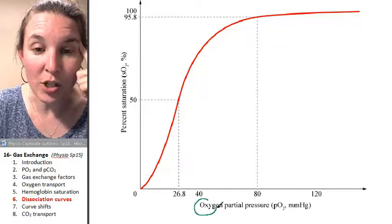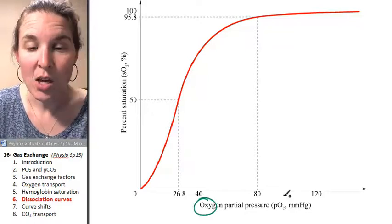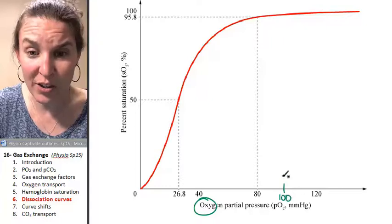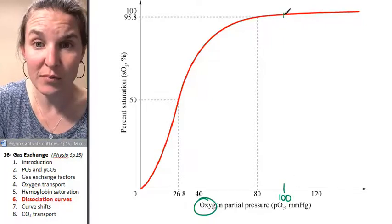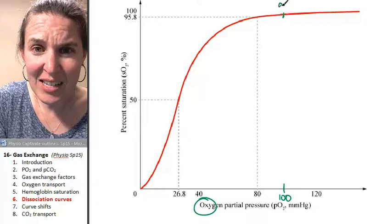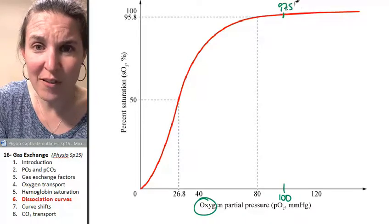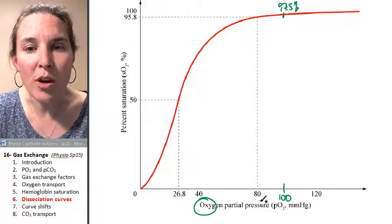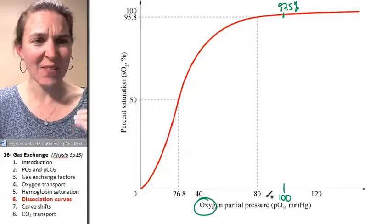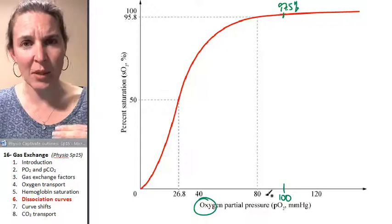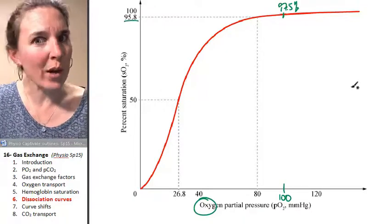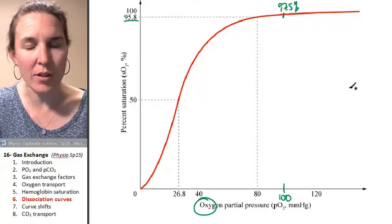Here's partial pressure of oxygen. At what we call our arterial partial pressure, we have 97.5% saturation. If we go down to a partial pressure of 80, that's significantly less oxygen in our plasma, we drop to a whopping 95.8% of our seats are filled. Seriously?